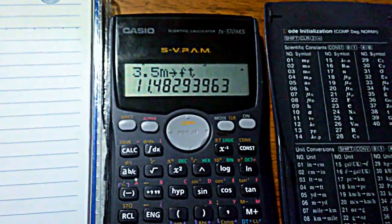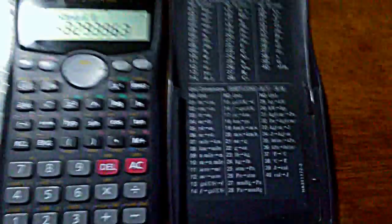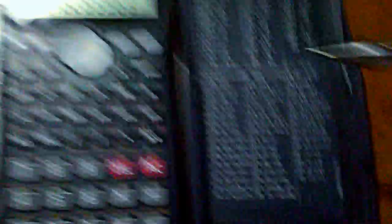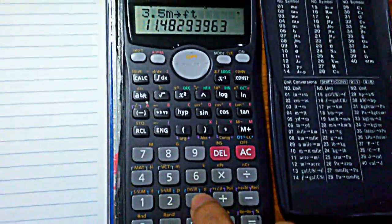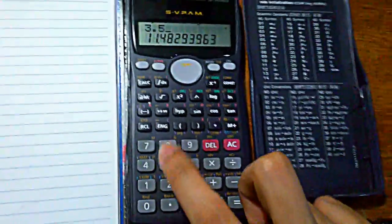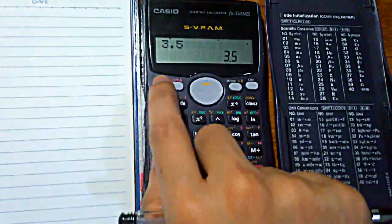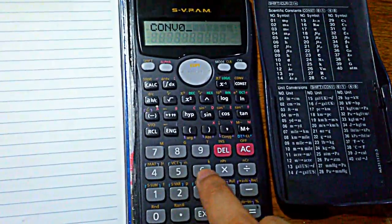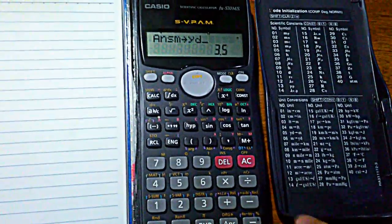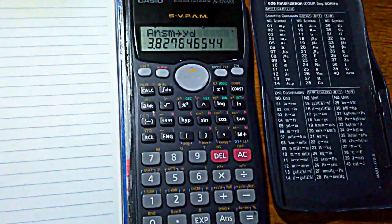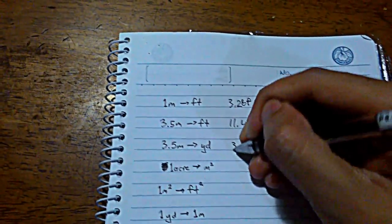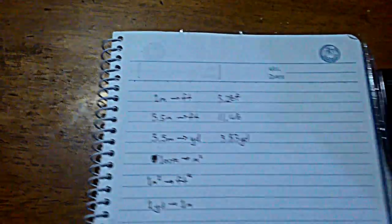Now what if I want to get that same figure or same starting point from 3.5 meters into yards? So I look again at the table. So meters to yards, I know that it's code 0, 6. So I follow the similar operation, the calculator, 3.5, and then activate the convert function. We know that it should be using code 0, 6, 0, 6. Then enter. So 3.5 meters is equal to 3.83 yards.